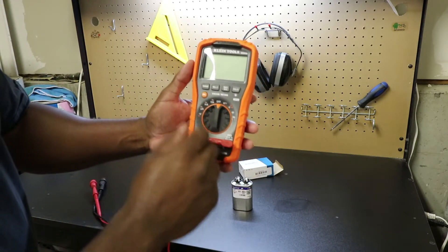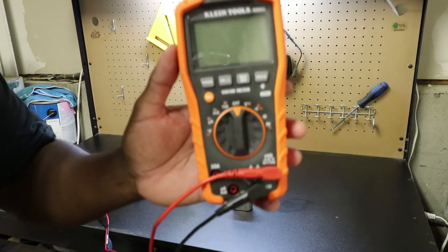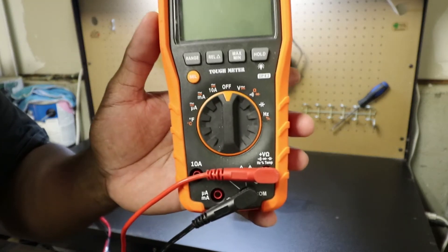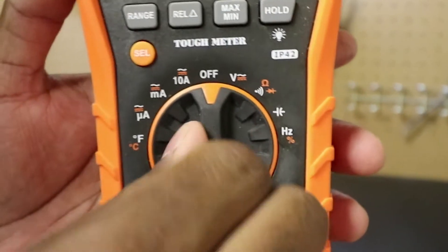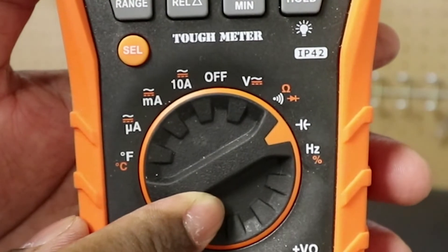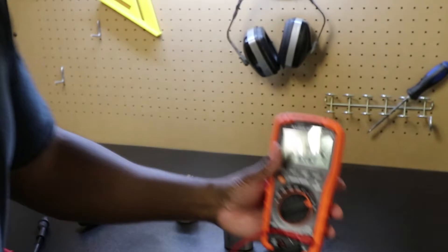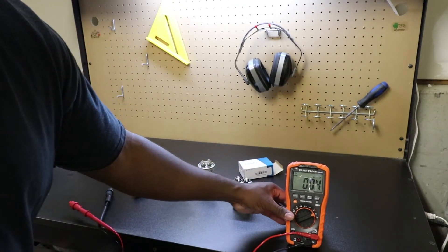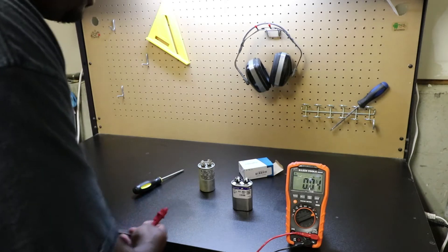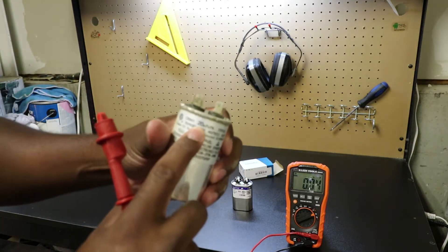Capacitance is this symbol right here. I'm going to turn my multimeter to that symbol. Not all multimeters can do this. Basically, it'll be one that costs a little bit more than an entry-level one. But anyway, so the thing I'm looking for...